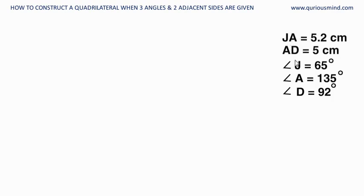Now let's see if these sides are included between these angles or not. Angle J and angle A, the included side is JA. Yes, so JA is an included side. Angle A and angle D, included side is AD. Yes, AD is an included side. So both the requirements are fulfilled here.